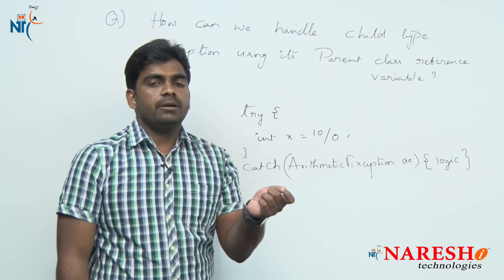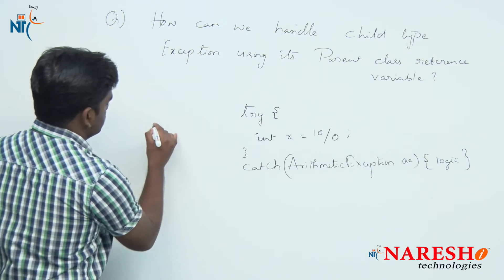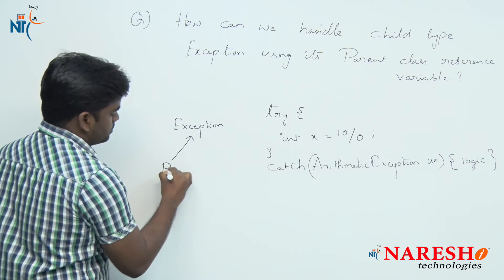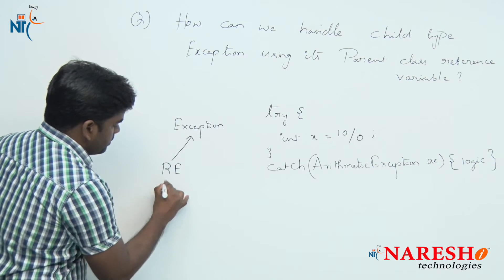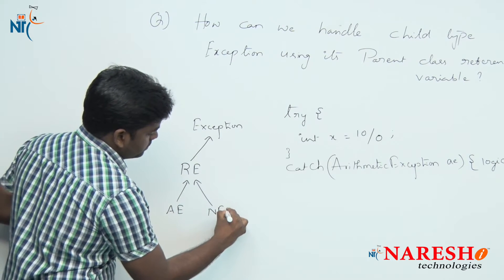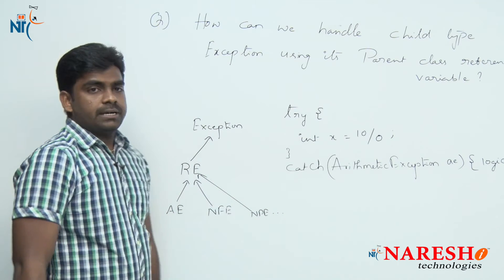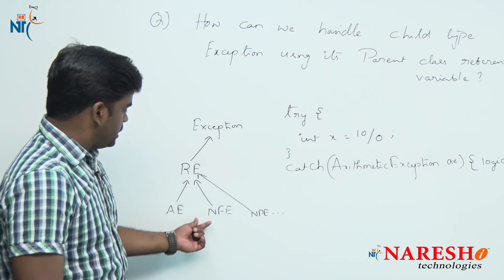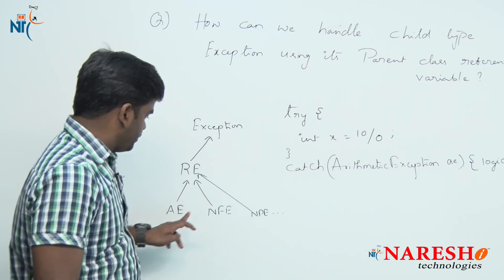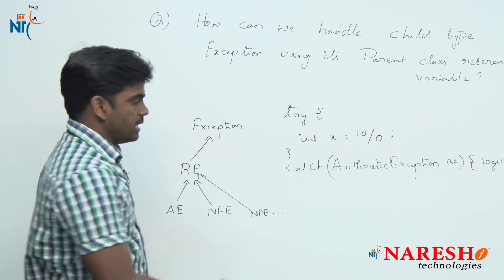To understand the hierarchy: this is the Exception class, and under it is RuntimeException. Some examples are ArithmeticException, NumberFormatException, NullPointerException — all these come under unchecked exceptions. Whenever we need to handle ArithmeticException, either we use ArithmeticException directly, or we use its parent class RuntimeException.